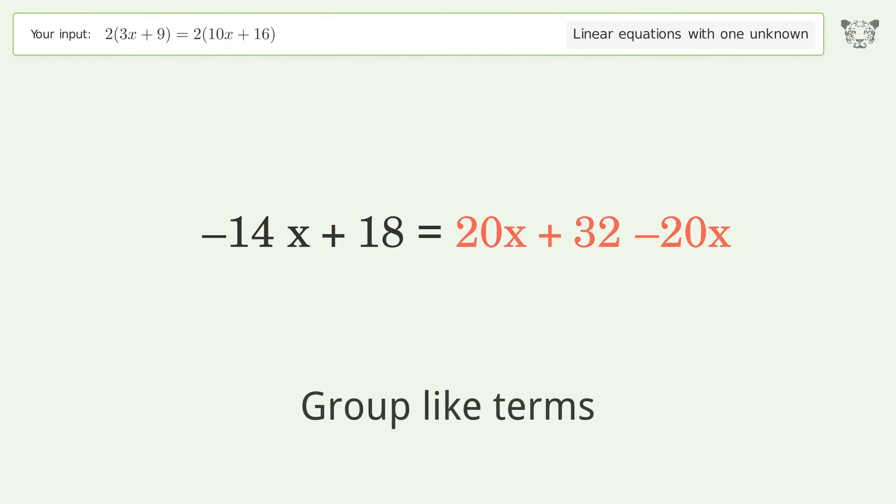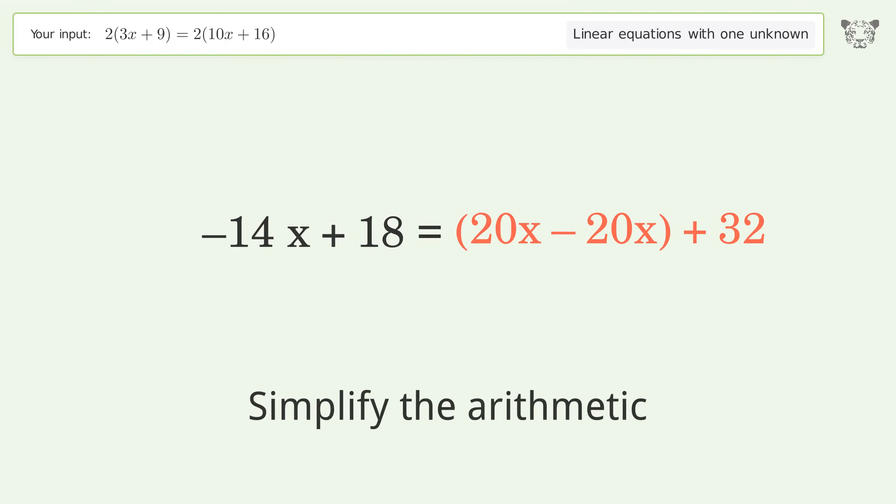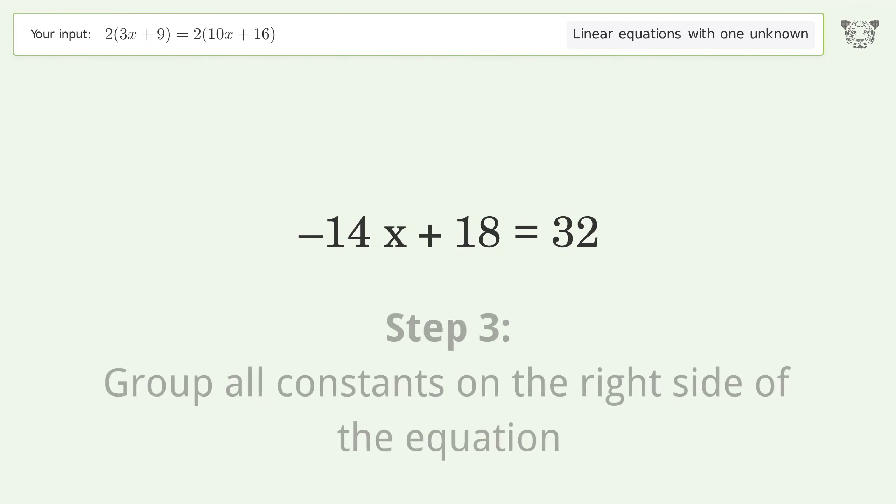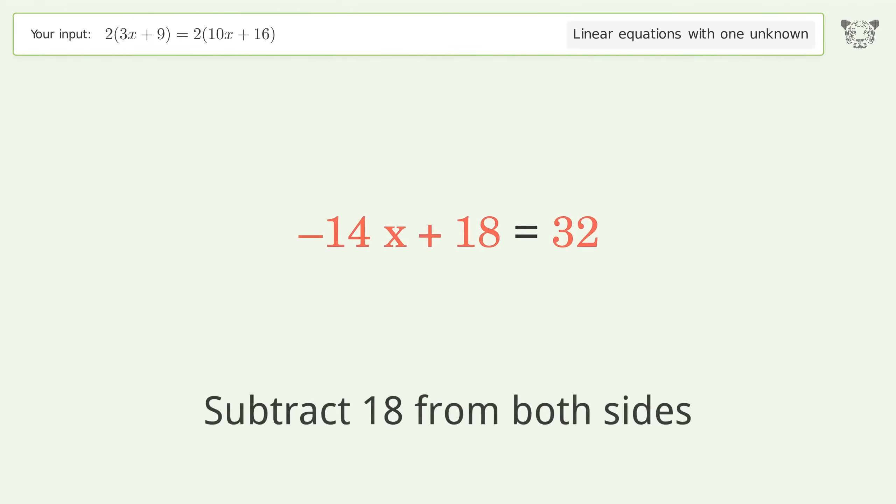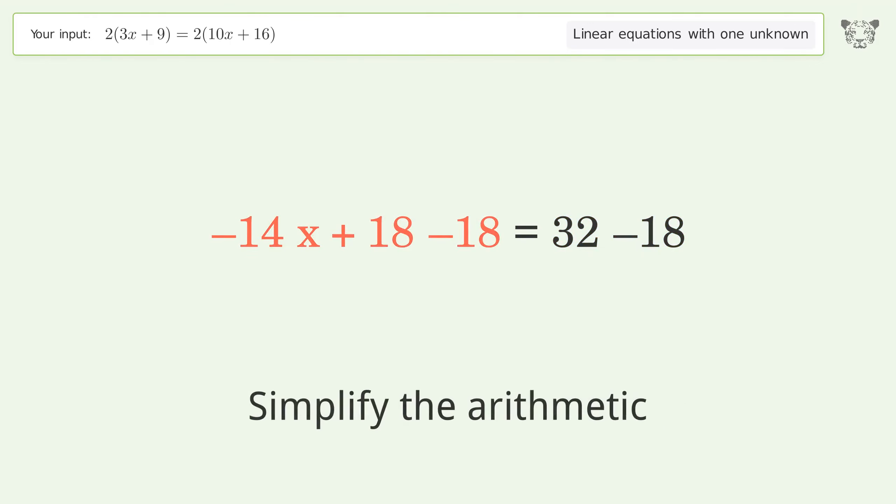Group like terms, simplify the arithmetic. Group all constants on the right side of the equation. Subtract 18 from both sides. Simplify the arithmetic.